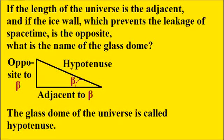If the length of the universe is the adjacent, and if the ice wall, which prevents the leakage of space-time, is the opposite, what is the name of the glass dome? The glass dome of the universe is called the hypotenuse.